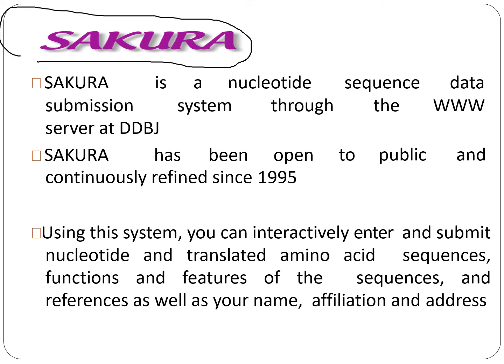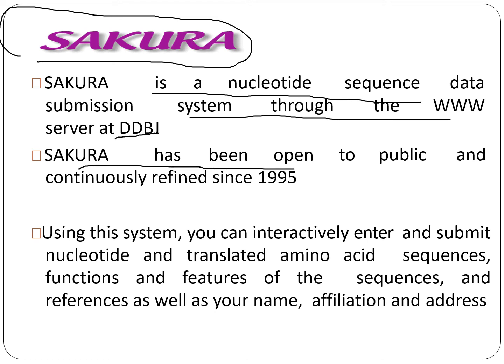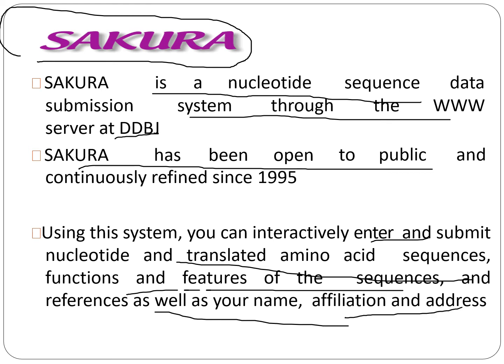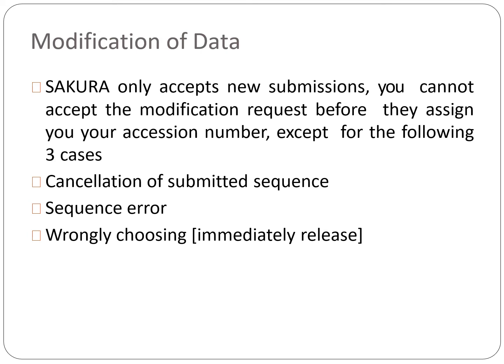Another important database is SAKURA, which is a nucleotide sequence data submission system through the www server at DDBJ. SAKURA has been open to the public and continuously refined since 1995. Using this system, you can interactively enter and submit nucleotide sequences, translated amino acid sequences, functions and features of sequences, and references such as your name, affiliation, and address.